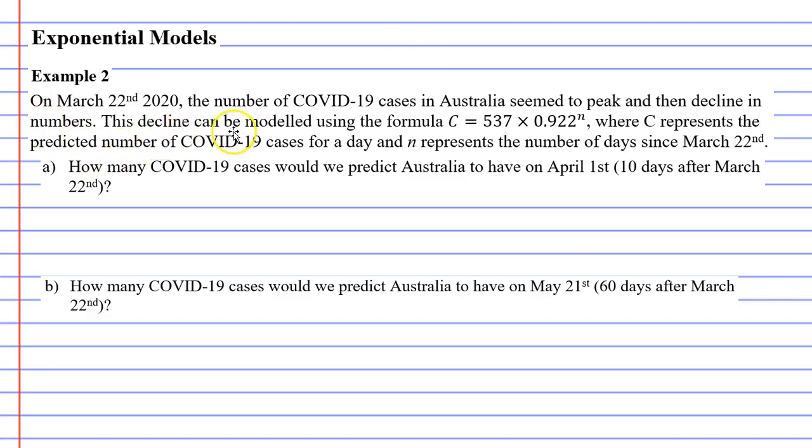This decline can be modeled using the formula C equals 537 times 0.922 to the power of N, where C represents the predicted number of COVID-19 cases for a day and N represents the number of days since March 22nd. So we'll get into question A, which says, how many COVID-19 cases would we predict Australia to have on April 1st? Now this is 10 days after March 22nd.